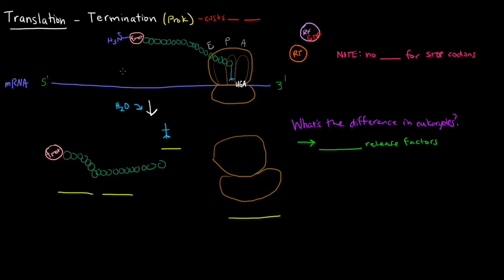In this video, I want to talk a little bit about the way translation is terminated. I'm going to mention it in prokaryotes and talk about the difference in eukaryotes. So after we've had a bunch of elongation steps, added a bunch of amino acids to make a really long peptide chain, eventually translation will have to end.